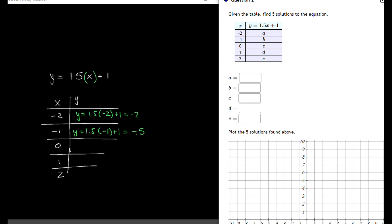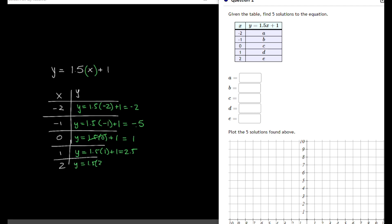I'm going to do the same thing for 0. So now I have y equals 1.5 times 0, which is just 0 plus 1. So all of this equals 1. And the last two, y equals 1.5 times 1 plus 1, that's going to be 2.5. And the last one, y equals 1.5 times 2 plus 1, which equals 4.